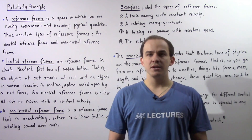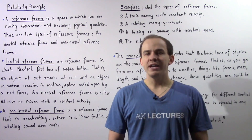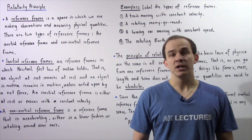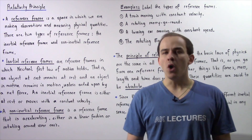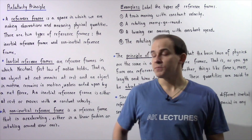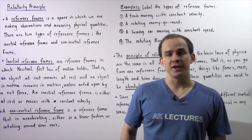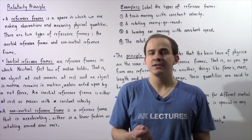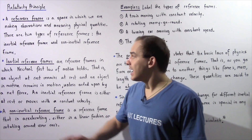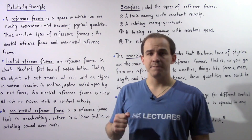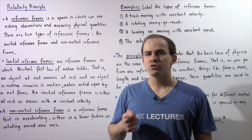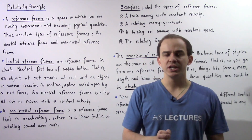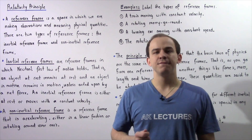Generally speaking, there are two types of reference frames: inertial reference frames and non-inertial reference frames. An inertial reference frame is one in which Newton's first law of motion holds — that is, inside an inertial reference frame, an object at rest will remain at rest and an object in motion will remain in motion unless acted upon by a net force.